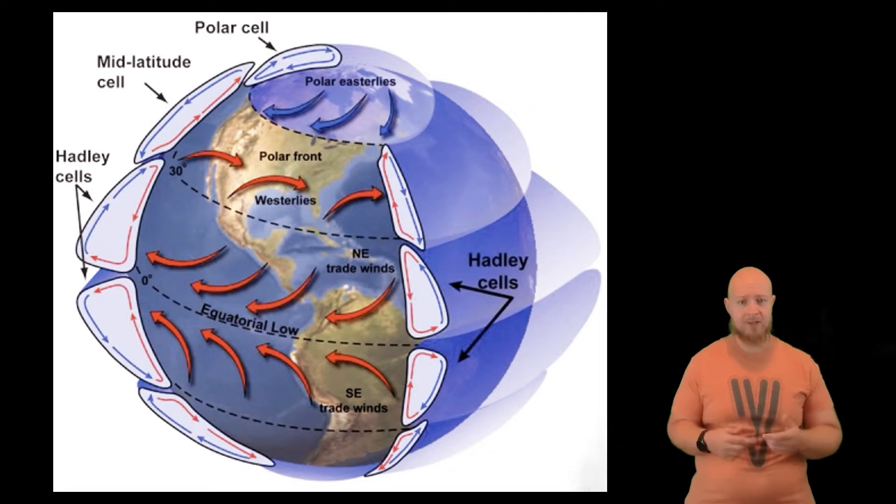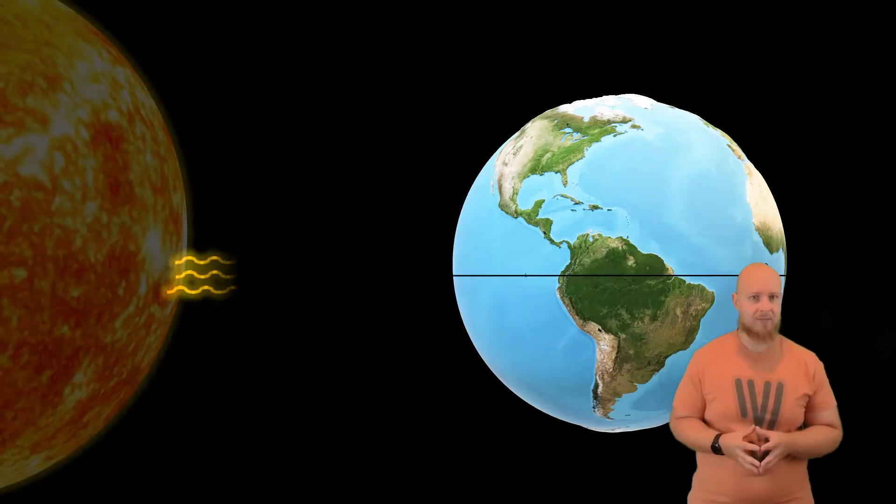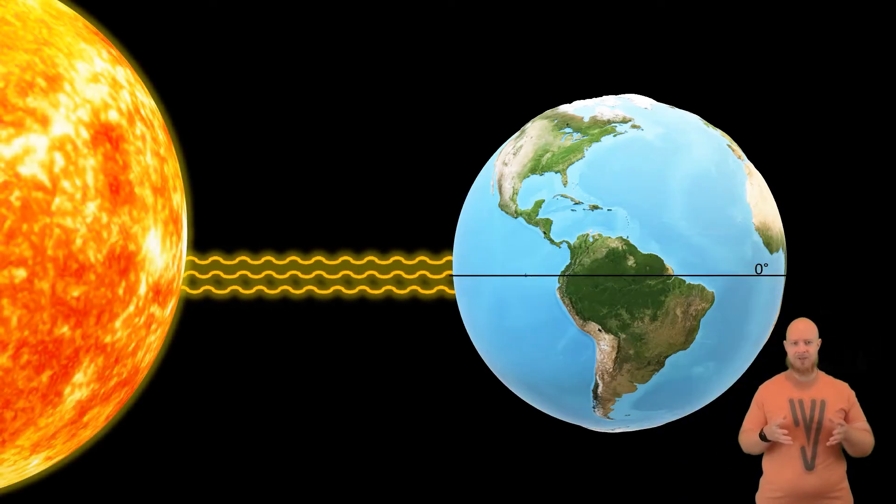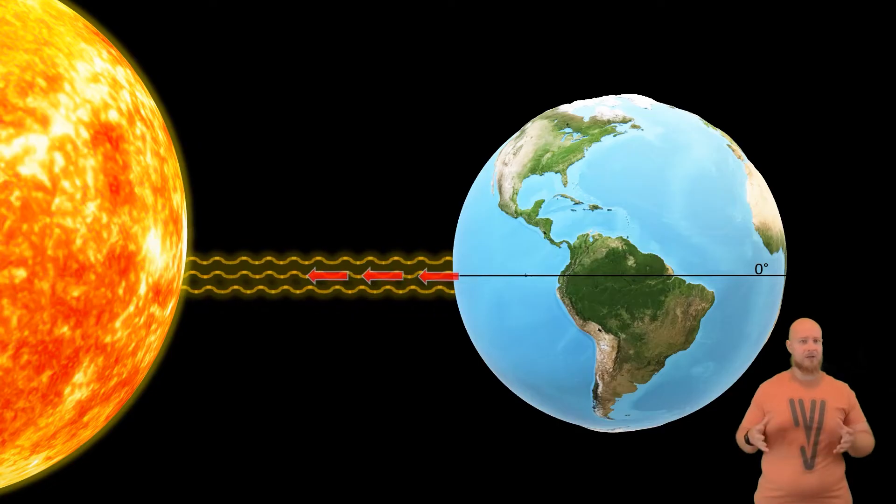At the equator, because of relatively consistent, direct, year-round sunlight, you get the most solar energy and generally the warmest temperatures. As a result of this consistent sunlight, the air is heated to a great degree and begins to rise along the equator. Along the equator, this ends up resulting in very powerful updrafts, which are those upward vertical columns of rising air, and because the air is rising, we have an area of low atmospheric pressure.